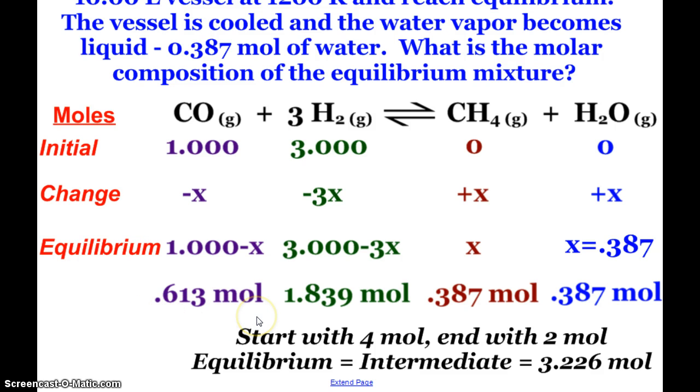0.613 moles of carbon monoxide, 1.839 moles of hydrogen, and the 0.387 of my products. The answer should make sense. My reactant moles went down, my product moles went up. And initially from my balanced equation, I would start with 4 moles, I'm going to end up with 2. And the equilibrium is in between that. It's an intermediate. And when I add these numbers up, it's 3.226 moles. So the answer makes sense.